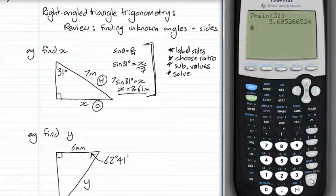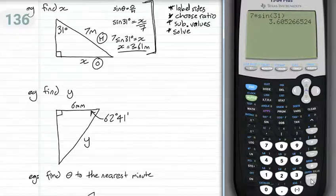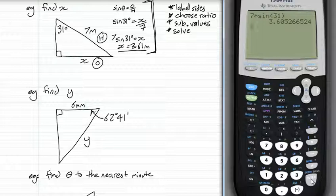Next question. Still using those steps. Firstly, label our sides. Here I have the hypotenuse and the adjacent.